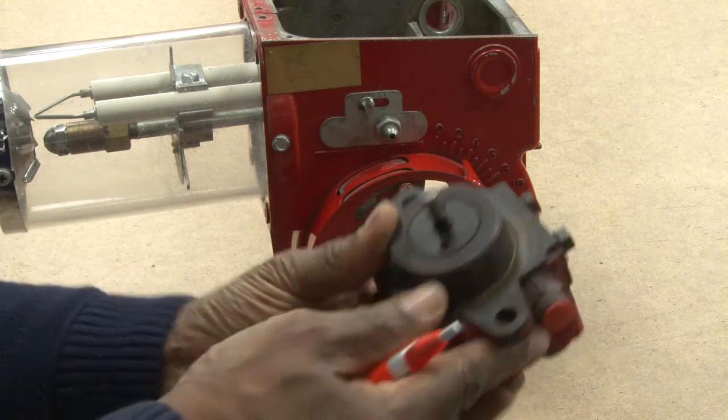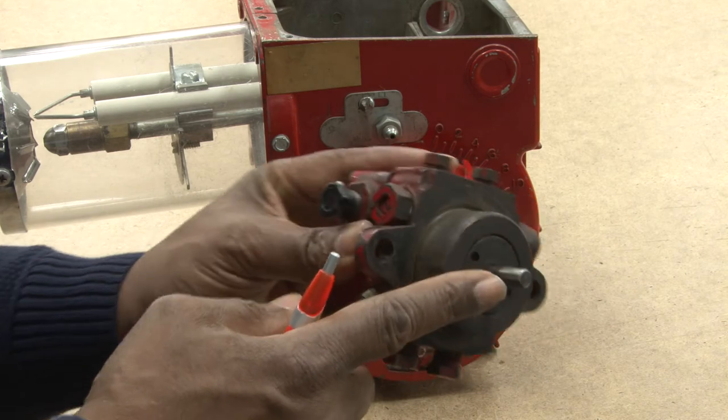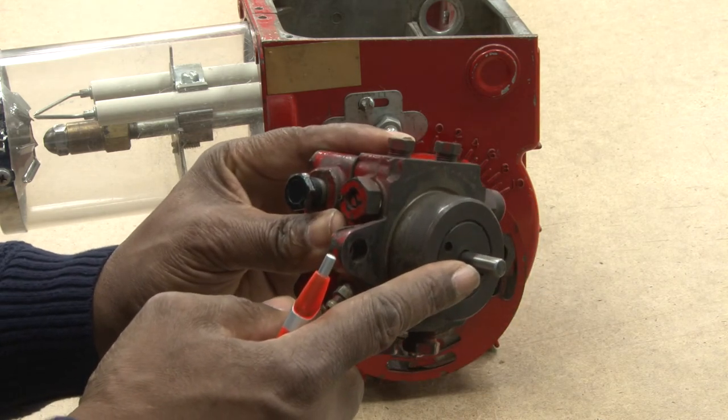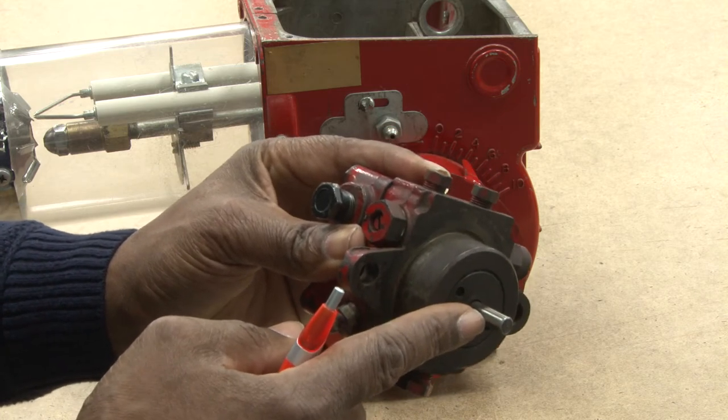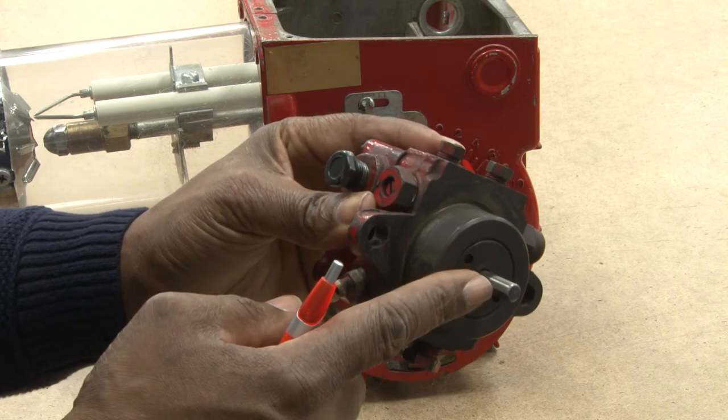It has a shaft on it which will be connected to a coupler, and the coupler will be joined to the blower wheel. The blower will be connected to the motor, the drive motor.